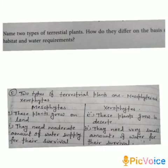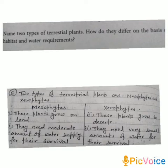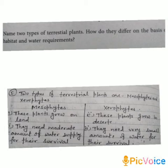Now the fifth question: name two types of terrestrial plants and explain how they differ on the basis of their habitat and water requirements. The two types of terrestrial plants are mesophytes and xerophytes. Mesophytes grow on land, while xerophytes grow in deserts. Mesophytes need a moderate amount of water supply for their survival, whereas xerophytes need a very small amount of water for their survival.